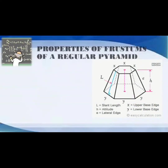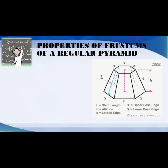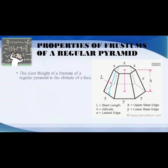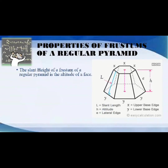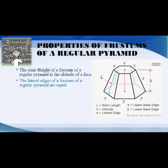Let's go through the properties of frustums of a regular pyramid. First, the slant height of a frustum of a regular pyramid is the altitude of a face. Second, the lateral edges of a frustum of a regular pyramid are all equal in length.